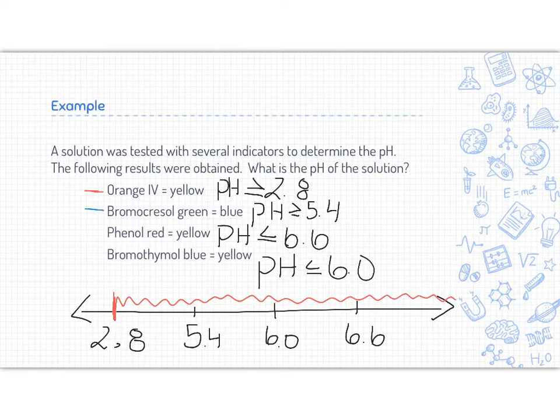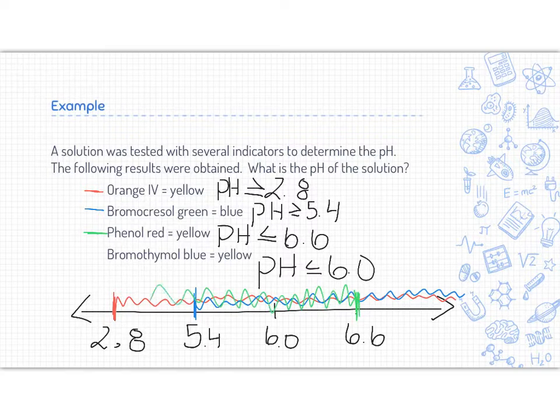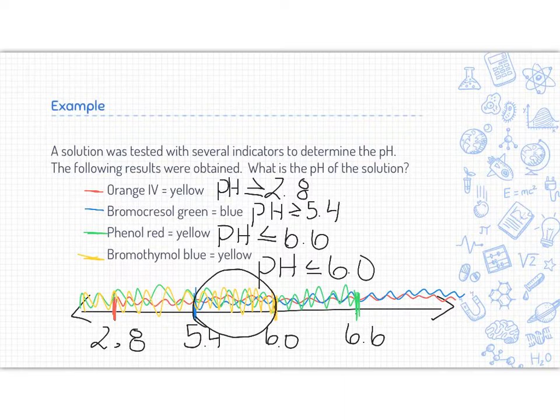Doing the same thing for bromocresol green, the pH had to be 5.4 or greater. Phenol red, the pH had to be 6.6 or less. And the last one, bromothymol blue, the pH had to be less than or equal to 6. Now looking at this, it's a bit of a disaster, but what we're looking for is where all four, or however many we had in our question overlap. And so they all overlap between 5.4 and 6.0.